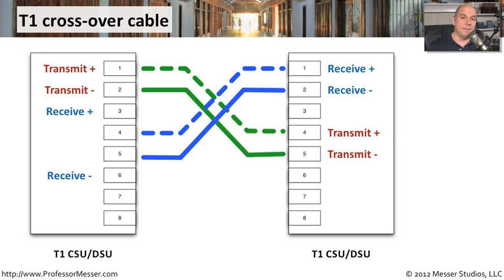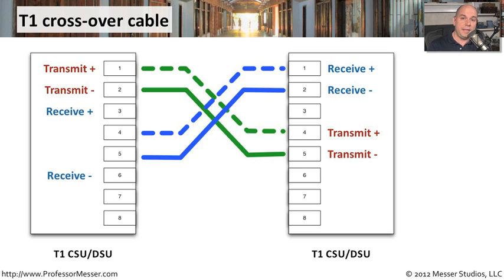Ethernet isn't the only networking type to use crossover cables. For example, on a T1 wide area network link connecting to a CSU-DSU — channel service unit/data service unit — these devices take the signal from the WAN and pass it to your router, usually via a serial connection. Normally a straight-through cable runs from the smart jack provided by your network provider directly to the CSU-DSU. However, if you have two CSU-DSUs back to back in a lab without a provider network in between, you need to connect transmit to receive and receive to transmit, so you would use a crossover cable.